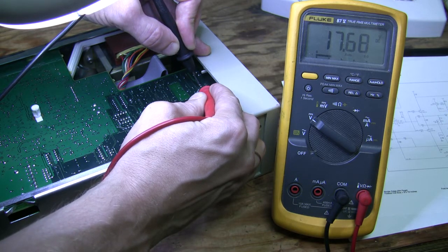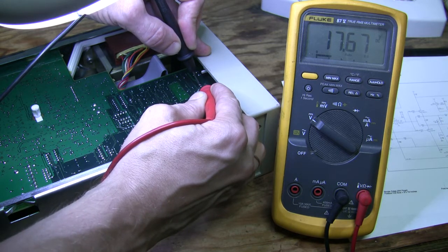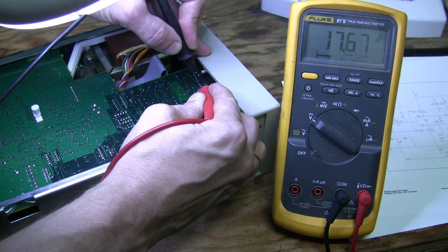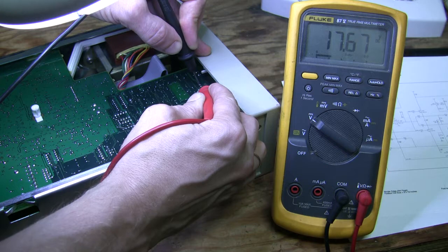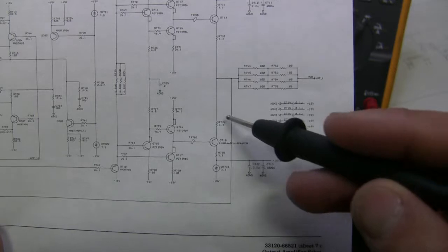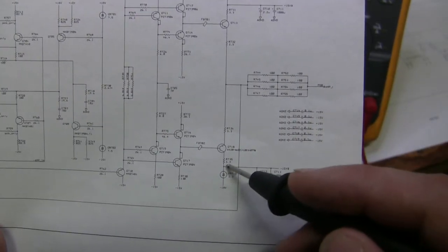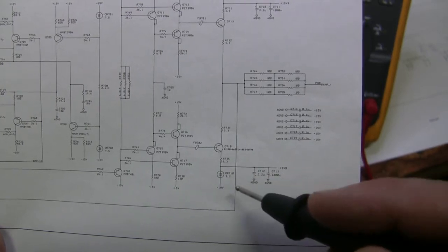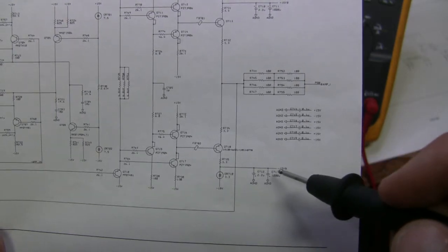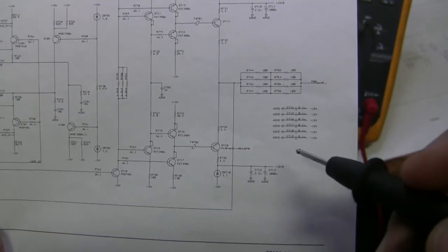So these zeners are supposed to drop 3.3 volts each. And on this side it seems like it's not dropping much. So it seems to me that something is wrong here on the negative side. The drop here is supposed to be 3.3 but we see a drop of less than a volt. So maybe the zener failed, maybe the output transistor or something else.